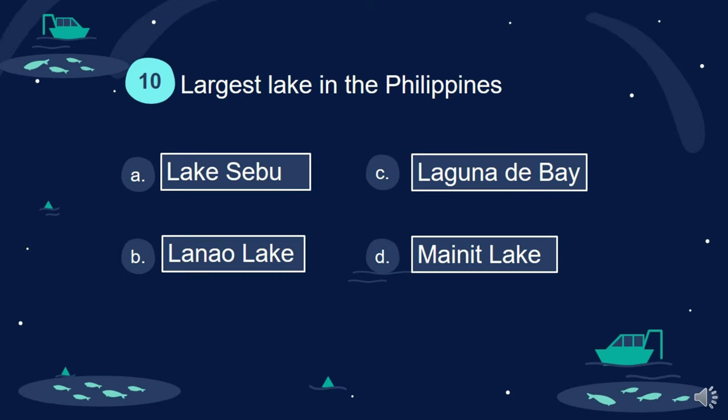Question 10. Largest lake in the Philippines: A. Lake Cebu. B. Lanao Lake. C. Laguna de Bay. D. Mainet Lake.